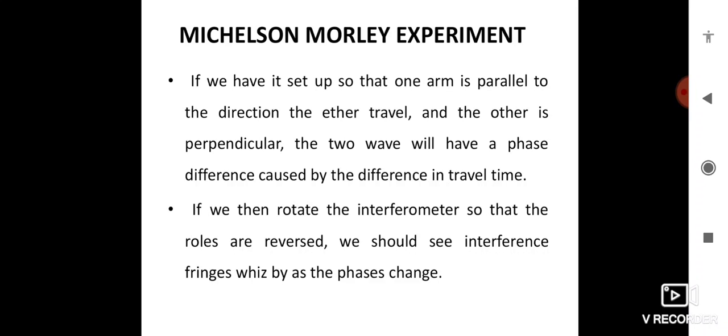The setup had one arm parallel to the direction that the ether travels and another perpendicular. The two waves will have a phase difference caused by the difference in travel time. If you then rotate the interferometer so that the roles are reversed, we should see interference fringes shift by the phase changes.